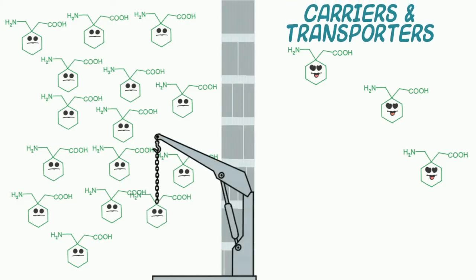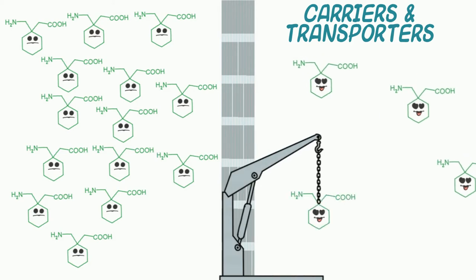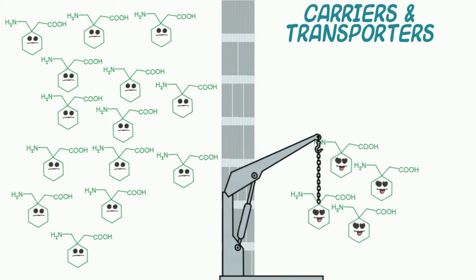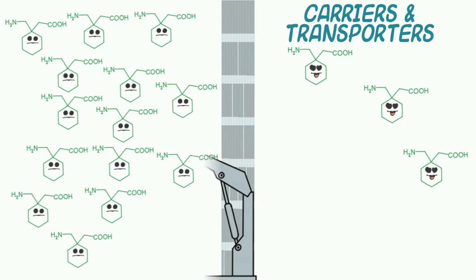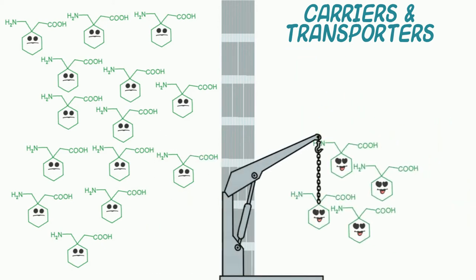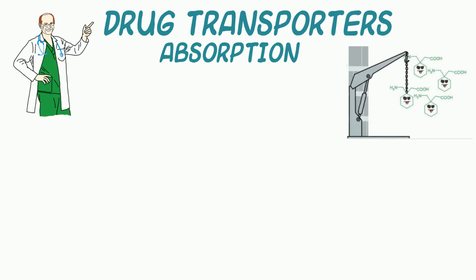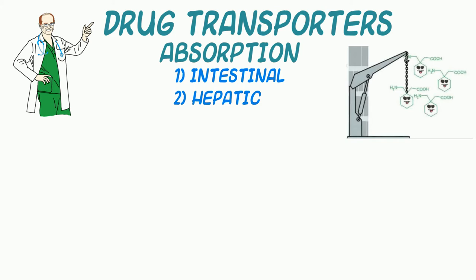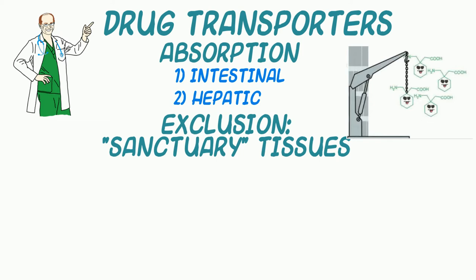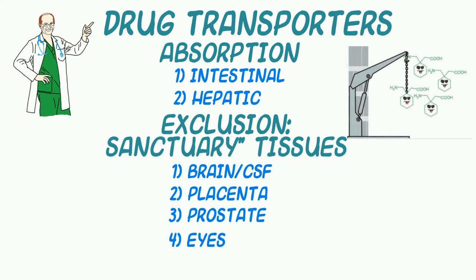There are also specialized proteins in cell membranes that move endogenous and exogenous compounds through tissue barriers. Organic anion and cation transporters, or carriers, can be tied to transmembrane ionic gradients such as sodium and hydrogen. Active transporters — meaning those that expend energy — also exist. Transport proteins are located at portals of entry for exogenous compounds, examples including intestinal and hepatic cells. Conversely, such carrier proteins may be placed to reduce entry of xenobiotics into what we call sanctuary tissues like the brain, cerebrospinal fluid, placenta, prostate, eyes, or testicles.